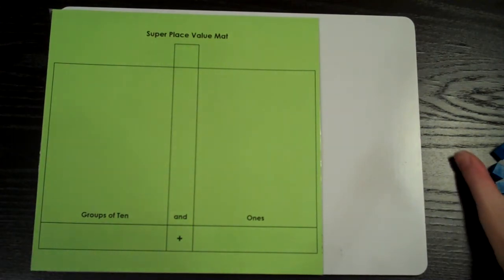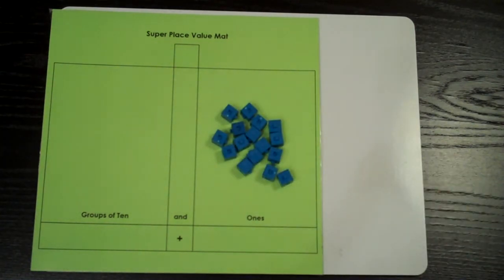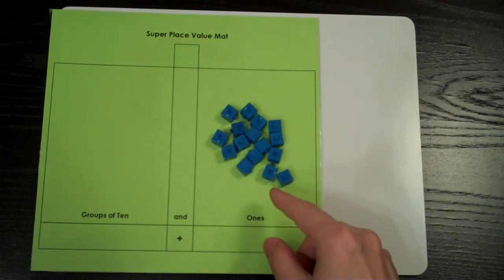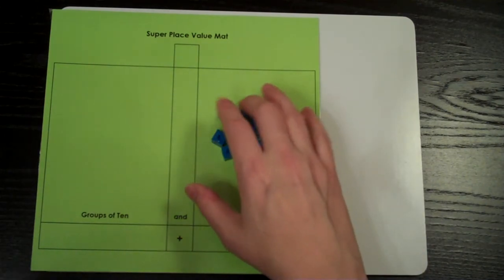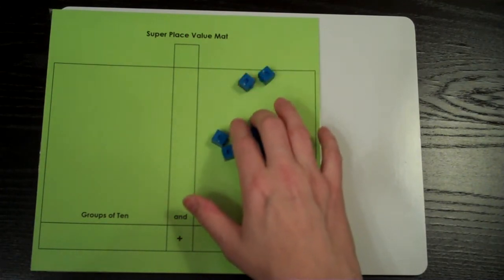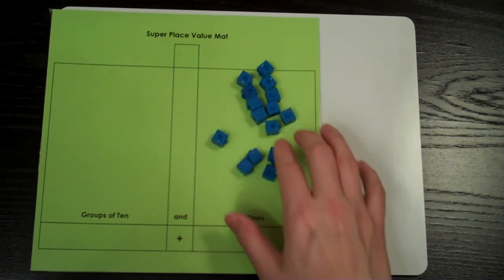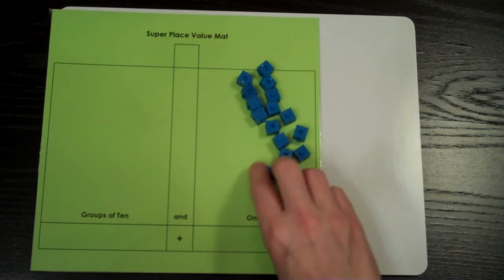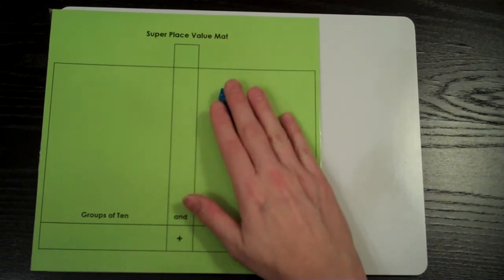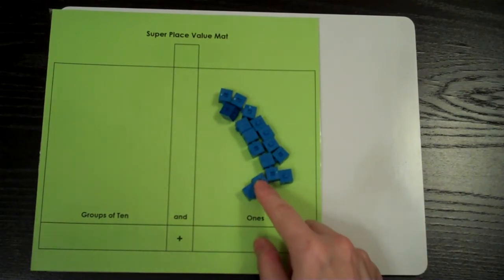We're going to use a handful of units. Let's count them to see what number they represent. As they are units, I've put them all in the ones place. I'm going to count by twos because it's faster: 2, 4, 6, 8, 10, 12, 14, 16. Right now, I've made the number 16 with units.